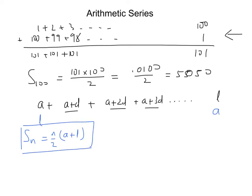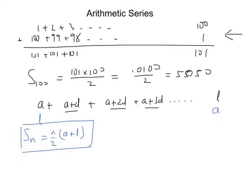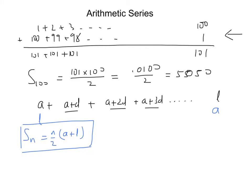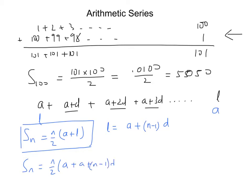Now, the last term L can also be written as the first term plus some multiple of D. There is no difference added on the first term, one difference on the second term, two on the third, three on the fourth — so on the nth term there must be N minus 1 differences. Our formula becomes Sn = N/2 times (A plus A plus (N−1)D), which simplifies to Sn = N/2 times (2A + (N−1)D). That's another very useful formula.